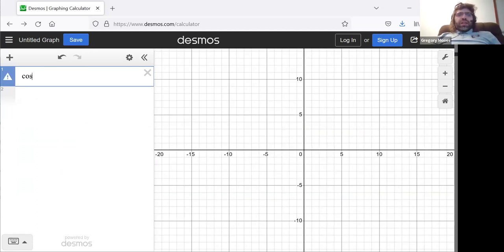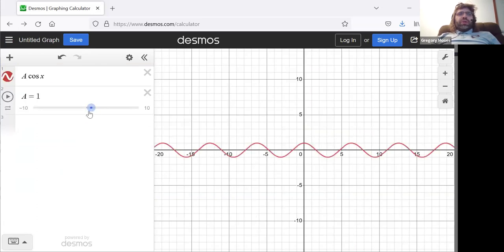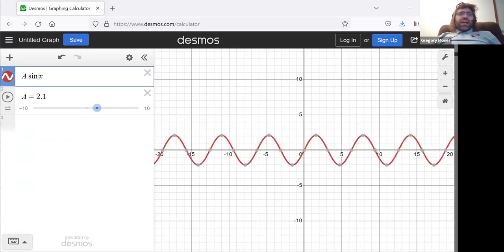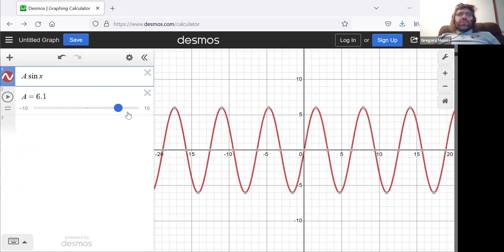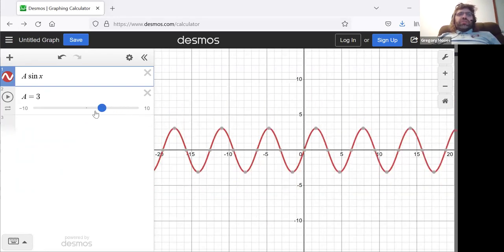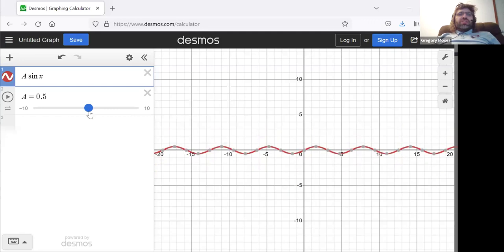We've seen if we have a cosine, we've seen what happens if we put an A up there. The A stretches the graph or it presses the graph down. And that's exactly what happens to the sine as well. A stretches it or smooshes it down.